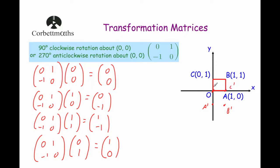So as you can see, the square has been rotated 90 degrees clockwise about the origin to give us this square here — or 270 degrees anticlockwise. And that's it. So the transformation matrix that is a 90 degrees clockwise rotation about the origin, or a 270 degrees anticlockwise rotation about the origin, is the matrix 0, 1, minus 1, 0.